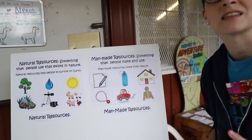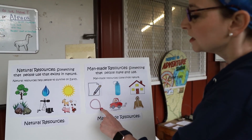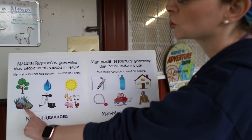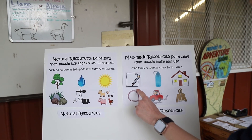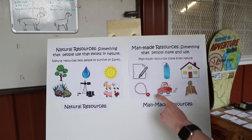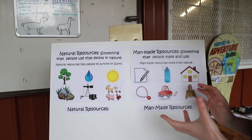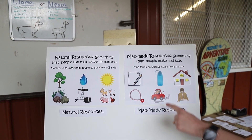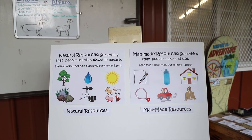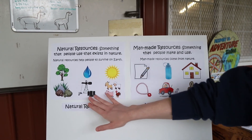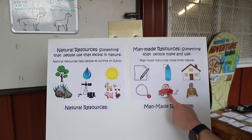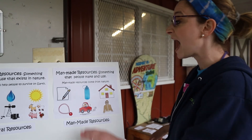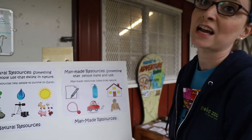Jewelry like necklaces and earrings — the diamonds, the gems, actually come from underground. But all the materials we use to put together a necklace come from humans; we have to use machines to build those and to put them together. Cars are fueled by oil, which comes from nature, but the car itself we have to build. We have to use factories and machines to actually make and use that car.